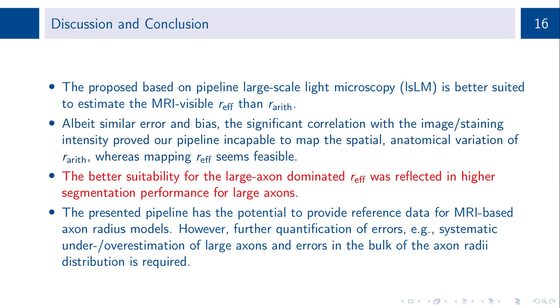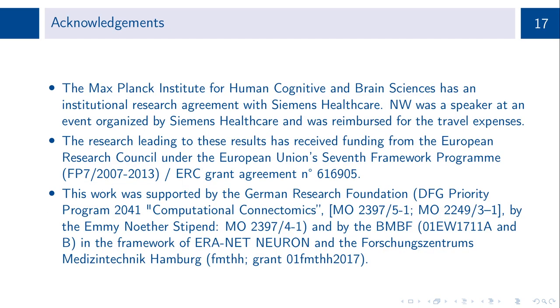The better suitability for the large-axon-dominated effective radius was also reflected in higher segmentation performance for large axons. We demonstrated that the presented pipeline has the potential to provide reference data for MRI-based axon radius models. However, further quantification of errors, for example systematic under- or overestimation of large axons, and errors in the bulk of the axon radii distribution is required. Thank you for your attention.